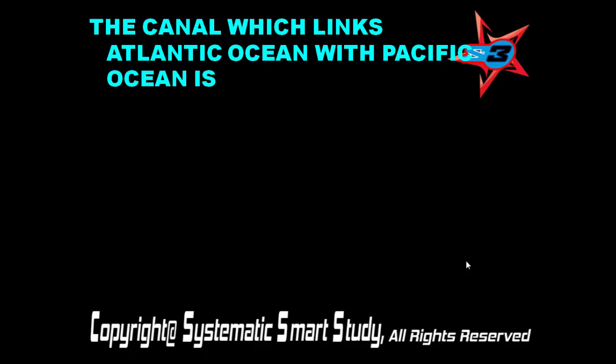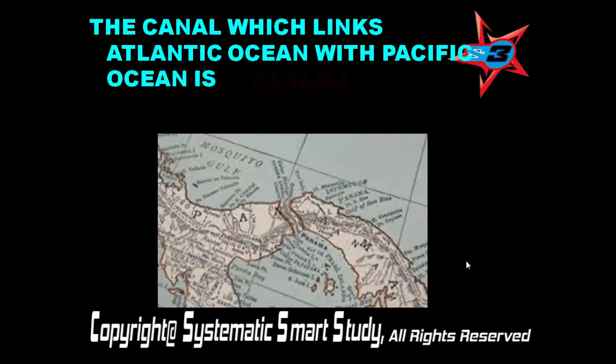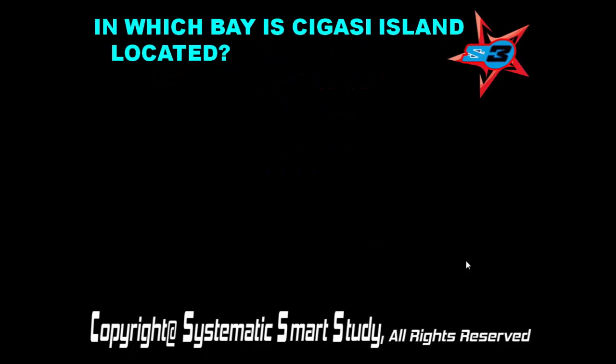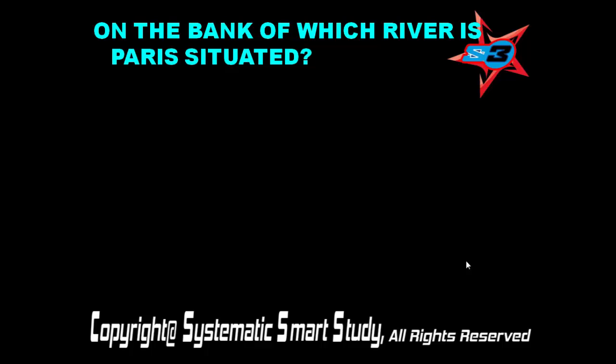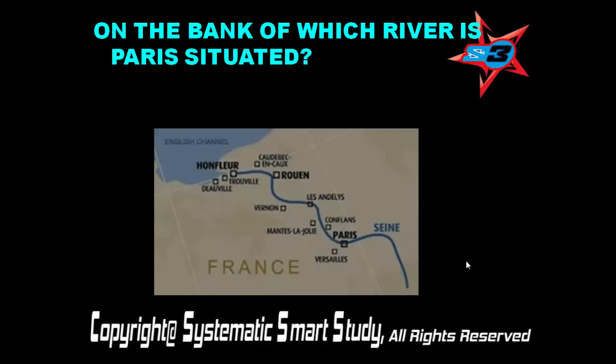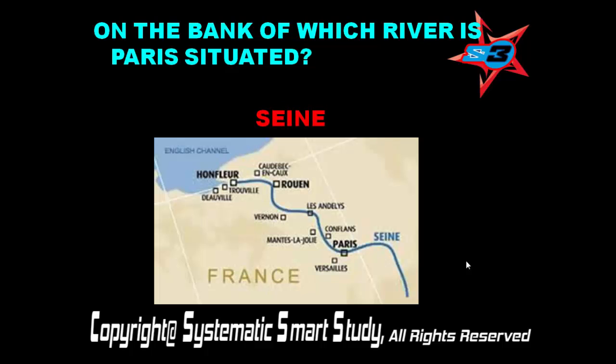The canal which links the Atlantic Ocean with the Pacific Ocean is the Panama Canal. In which bay is Saguenay Island located? Hudson Bay. On the bank of which river is Paris situated? Seine.